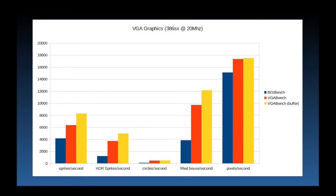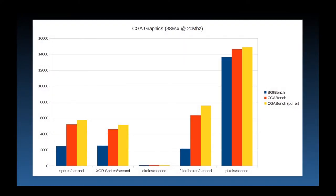The first test on the 386SX with the VGA library shows promising results. The test that affects performance for Bob's Fury the most is copying sprites with the XOR operation, which is somewhere near three times faster than the Borland library. Drawing to a buffer in memory is faster again, because main memory is faster than video memory on most machines. The CGA code fares well on the 386SX machine as well, showing significant speed gains for XOR image copying.